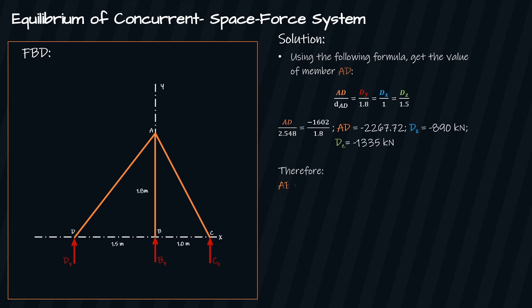Therefore, AB is equal to 4581.275 kN tension, and AC is equal to 3055.815 kN compression, and AD is 2267.72 kN compression.